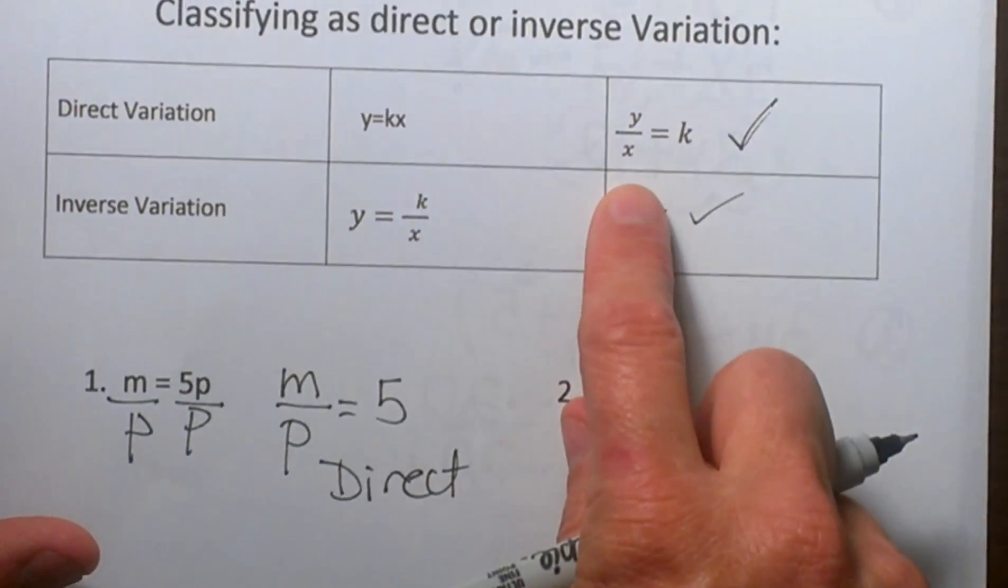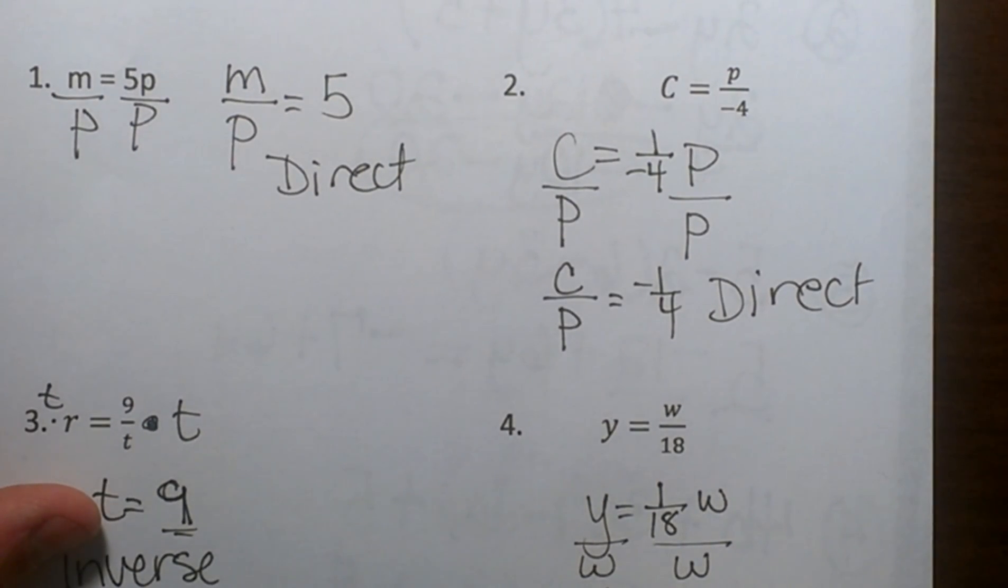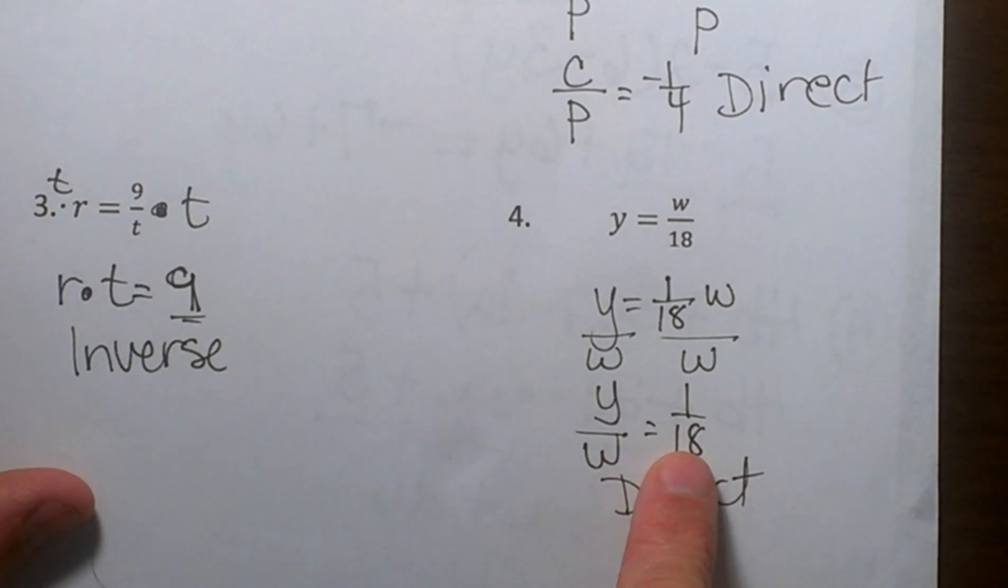Which one divides the variables to equal the constant? The direct does. So in these four problems I had three that ended up being direct.